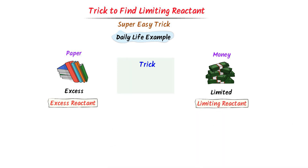The easy trick to find limiting and excess reactant is to follow these two steps. In the first step, we find the number of moles. In the second step, we find the simplest ratio. Using these two steps, we can instantly spot the limiting reactant and excess reactant.